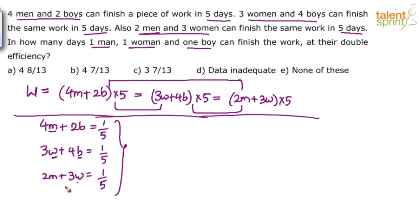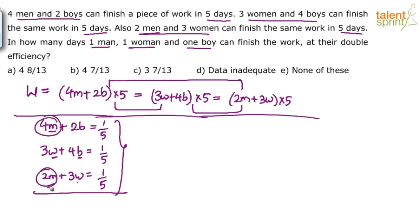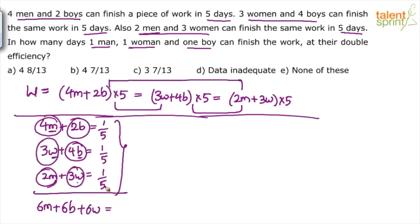There are three different workforces: 4 men + 2 boys, 3 women + 4 boys, and 2 men + 3 women — each with capacity 1/5. If all three groups work together, we get: 4+2 = 6 men, 2+4 = 6 boys, and 3+3 = 6 women. Their combined capacity is 1/5 + 1/5 + 1/5 = 3/5. So 6 men + 6 boys + 6 women have a total capacity of 3/5.